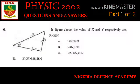Question number six: in the figure above, the value of X and Y respectively is what? Look at the options very well. The best option here is option A.